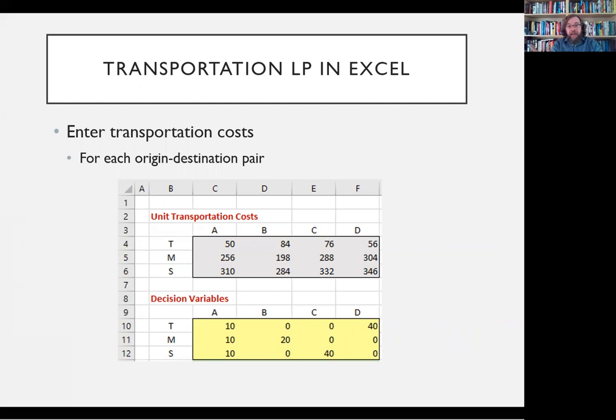So that, the gray on the top, those are my costs, C_ij, and then down below in the yellow, those are the Xs, X_ij.